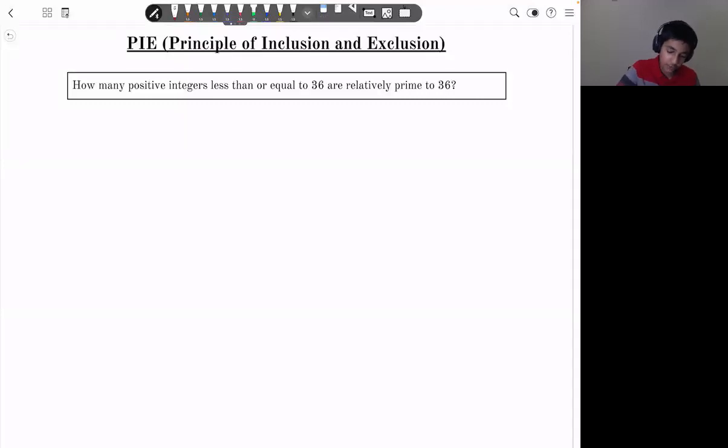How many positive integers less than or equal to 36 are relatively prime to 36? 36 is 2 squared times 3 squared. So in order for a number to be relatively prime to 36, it can't have a factor of 2 or 3.